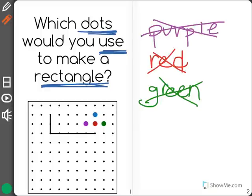Finally, when I try the blue dot, I can create four straight sides with the opposite sides being the same length. So I know that this shape is a rectangle, and the answer is the blue dot.